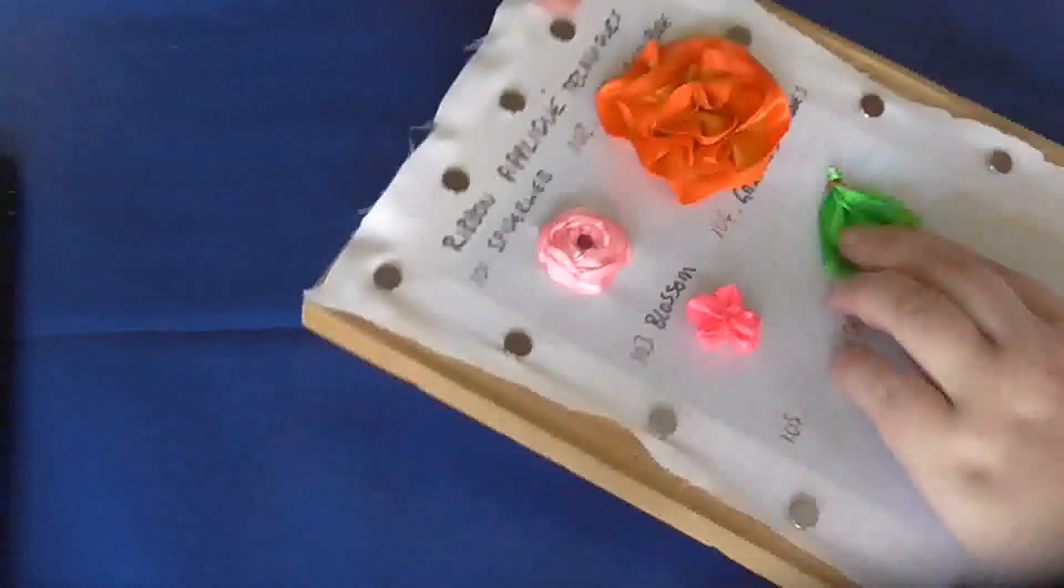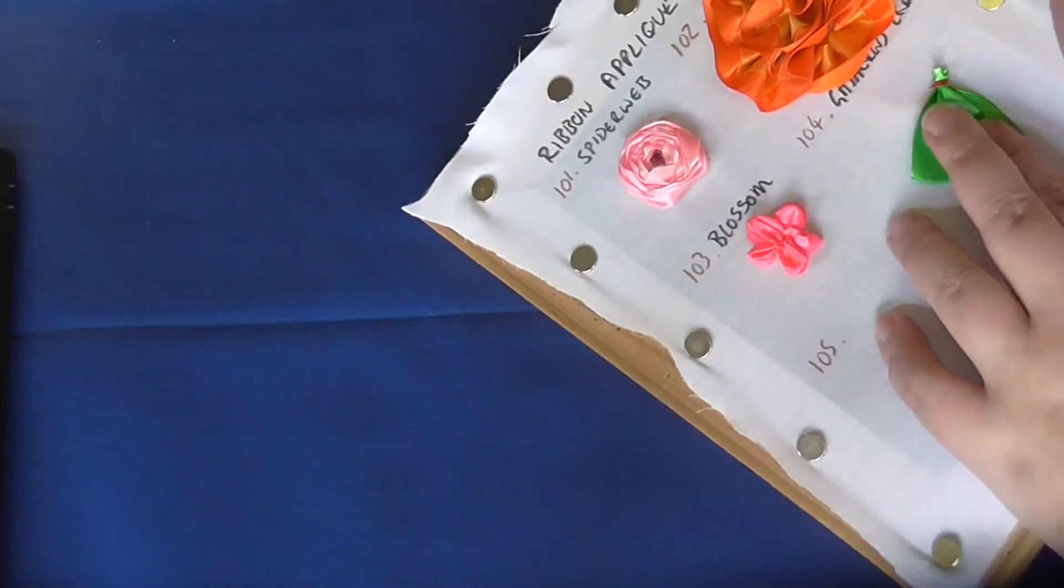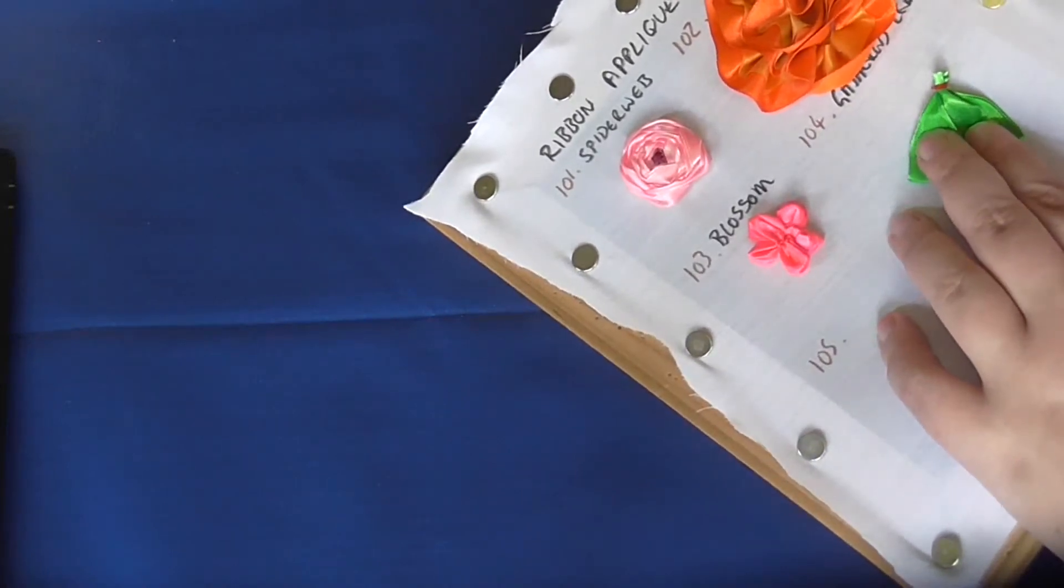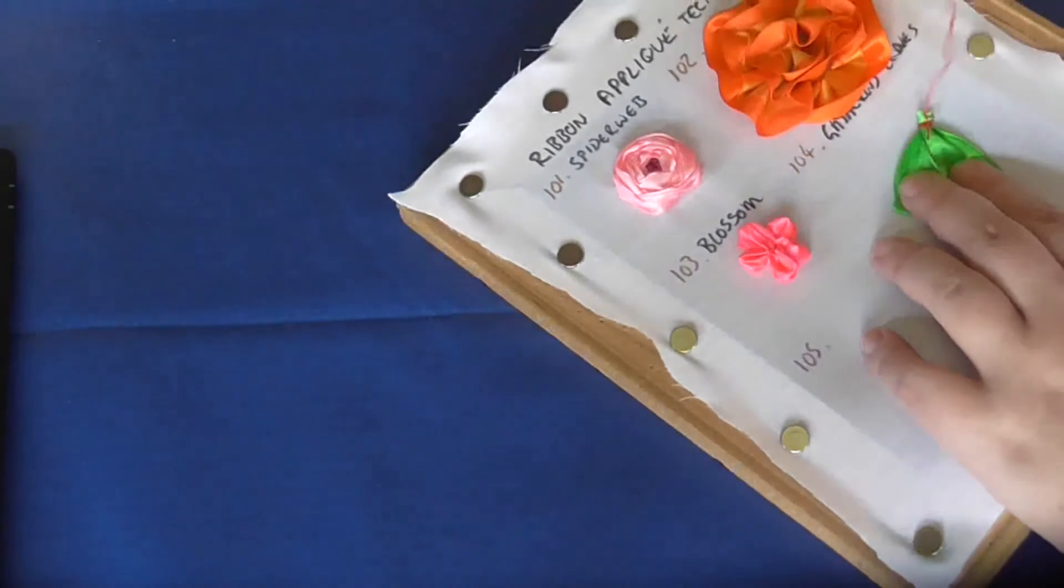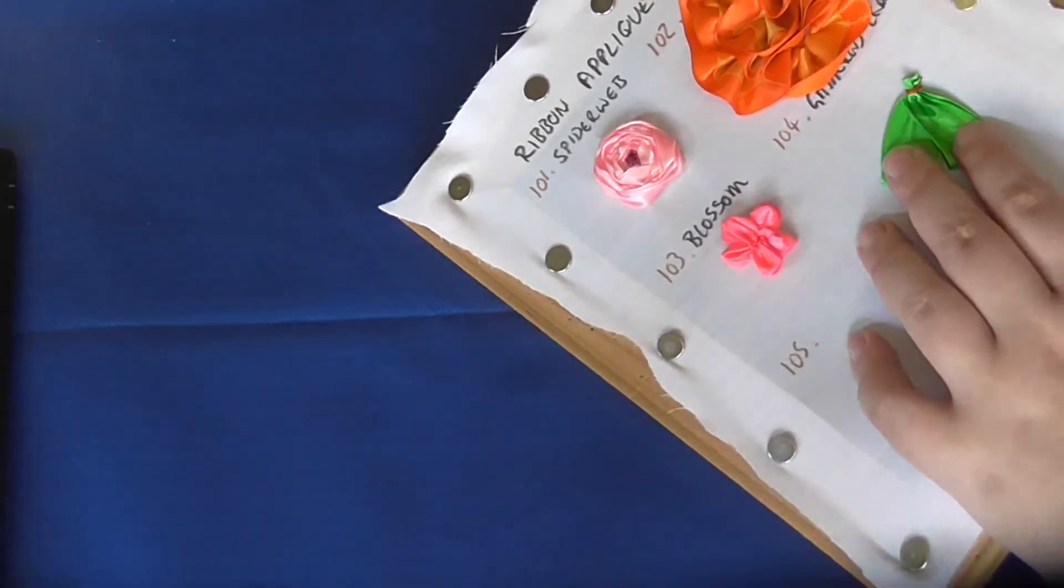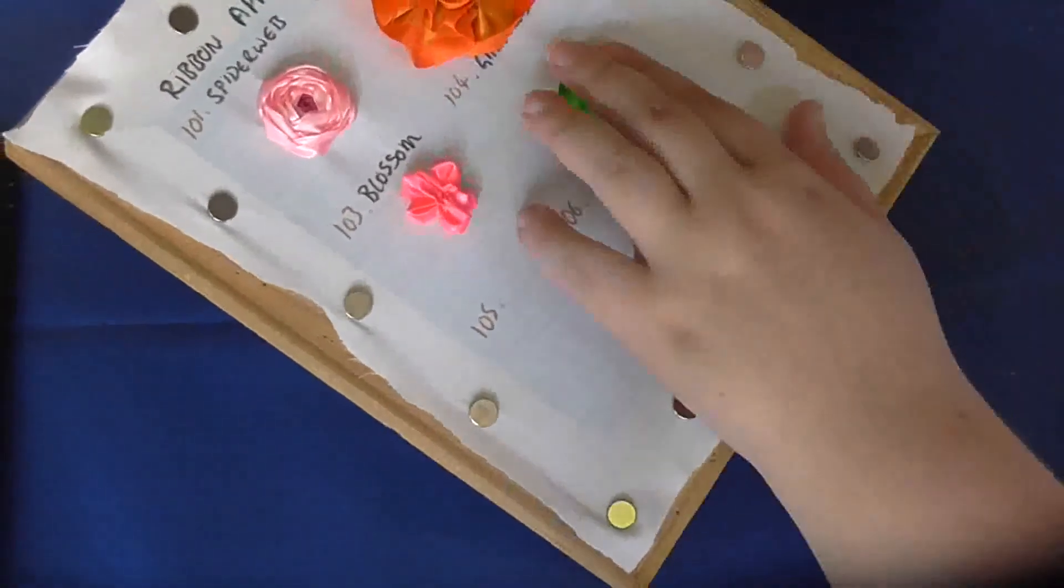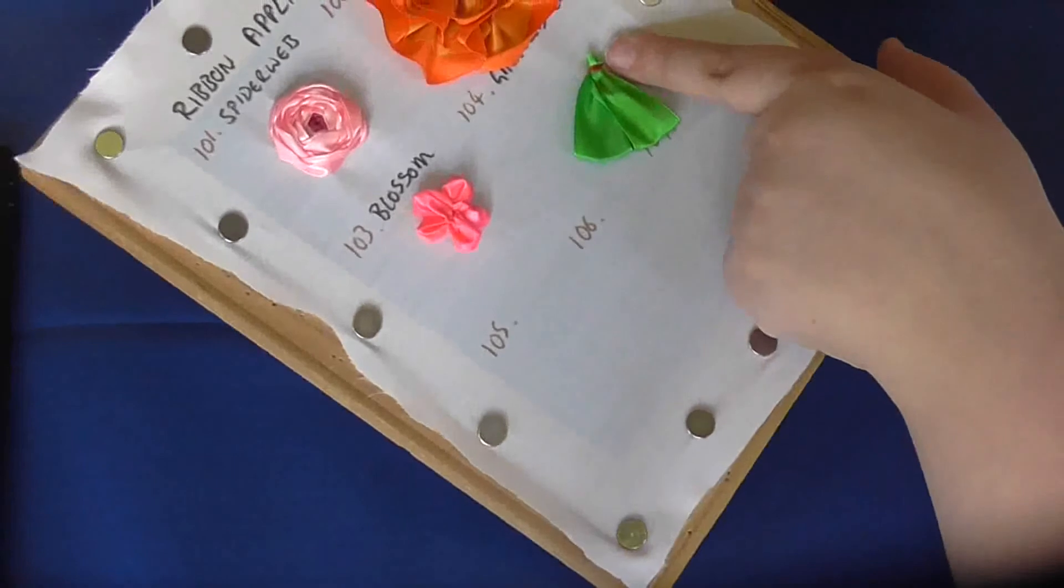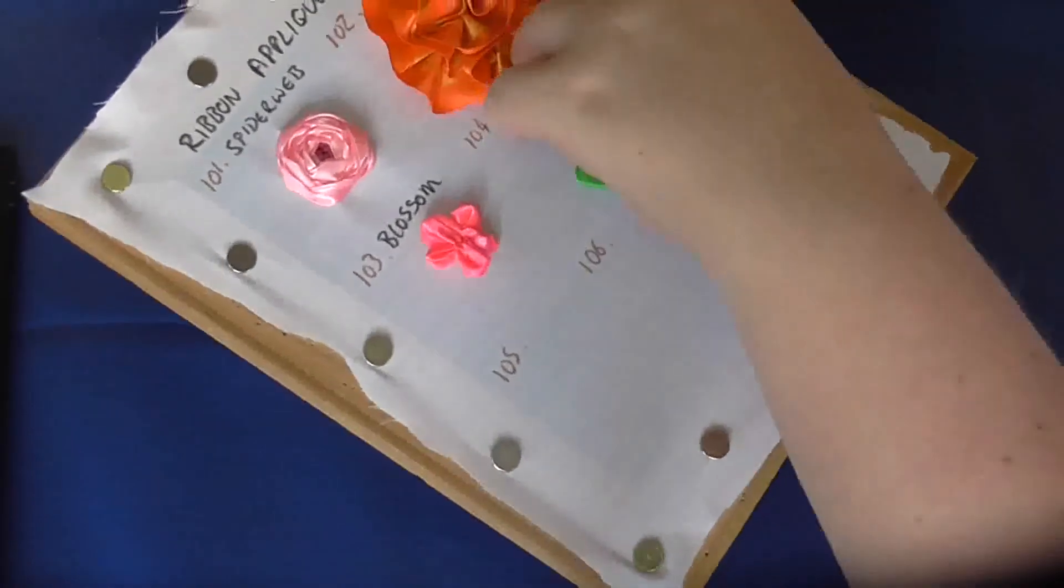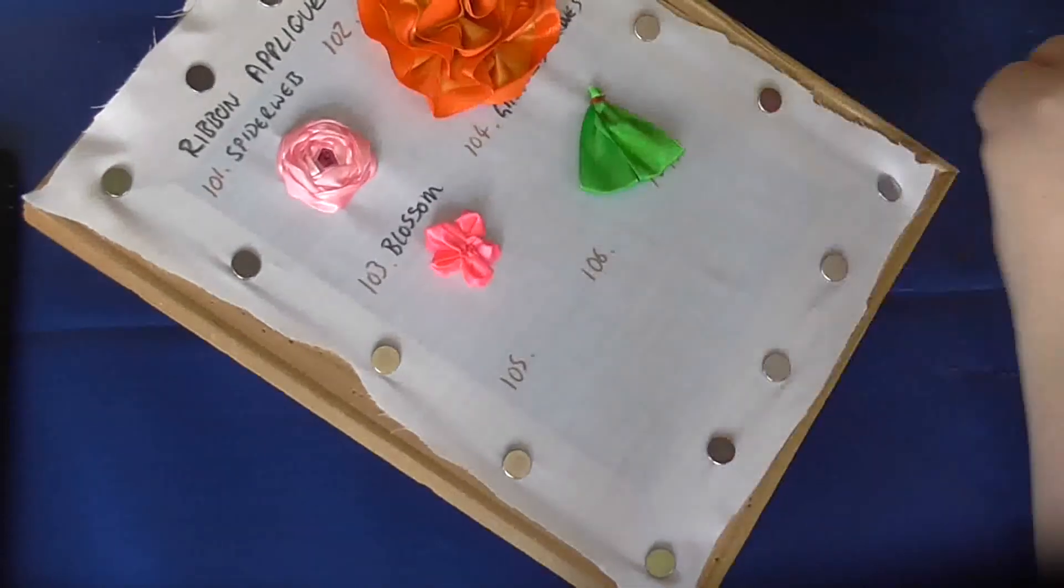I find this looks better if you put a very small stitch through the base here just to hold those open. That's a gathered leaf. Obviously you've got a raw edge here, so whatever you use this for, you're going to need to cover that at some point. So that's a gathered blossom and a gathered leaf.